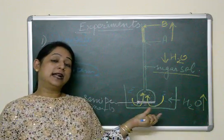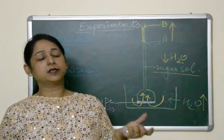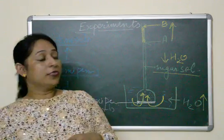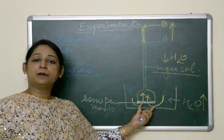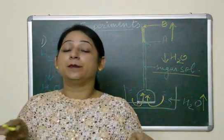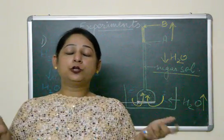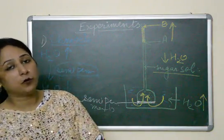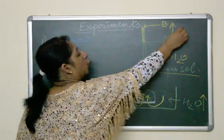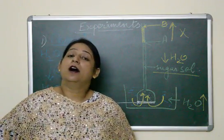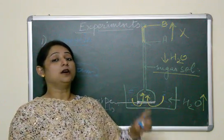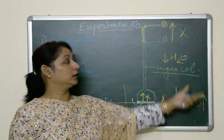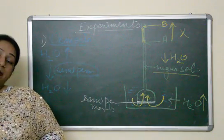The control for this experiment involves replacing the semi-permeable membrane with an impermeable membrane, which does not allow any movement of water or substances. In this case, there will be no rise in the water level, confirming that osmosis takes place specifically through the semi-permeable membrane, from high to low water concentration.